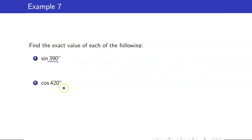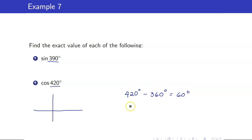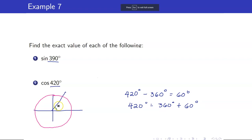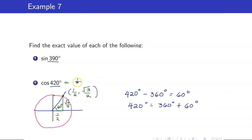For cosine of 420°: 420° = 360° + 60°, so it is coterminal with 60°. At 60°, the x-coordinate is 1/2. Therefore cosine of 420° = 1/2. In these two examples, the angles were coterminal with special angles 30° and 60°, so we didn't need reference angles.